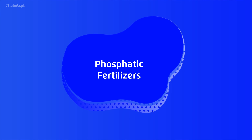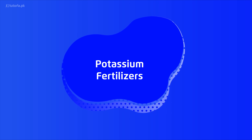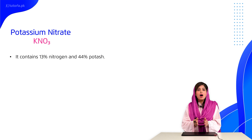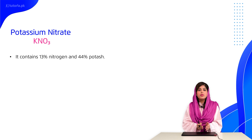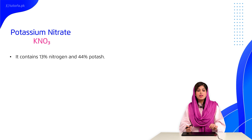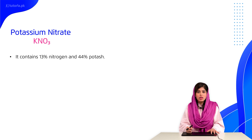Now we discuss phosphatic fertilizers — those that essentially provide phosphorus to the soil. Among phosphatic fertilizers, the most prominent one we discuss is diammonium phosphate (DAP), which contains 16% nitrogen and 48% phosphorus pentoxide. It can be used alone or in mixtures. For potassium fertilizers, we discuss potassium nitrate, which is obtained by reaction of sodium nitrate and potassium chloride. It contains about 13% nitrogen and 44% potassium.